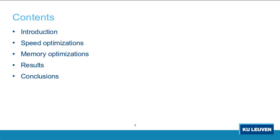Now let's jump into the presentation. I will start by introducing some necessary background, such as the context of this work, the basis of module lattices in cryptography, and efficient polynomial multiplication algorithms. I will continue explaining how we have improved these algorithms, and how we apply these optimizations to speed up Saber, which is one of the finalist schemes in the NIST standardization contest. I will also explain some memory optimizations that can be applied to Saber when low memory footprint is needed, for instance in embedded implementations, and finally I will show the most relevant results of this work and draw some conclusions.